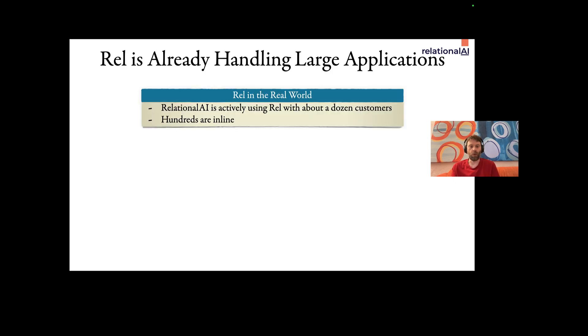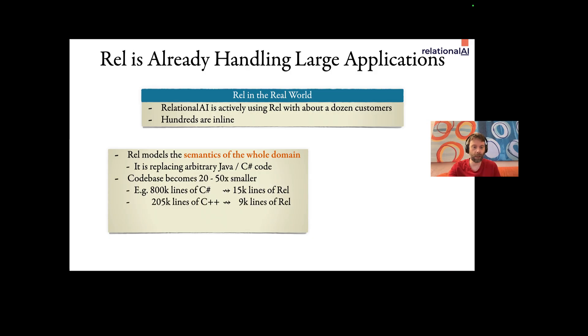Okay, yeah, I cannot explain the whole language in five minutes, but I can tell you how it's being used. So REL is already being used with customers for large applications, and the customer base is growing fast. In these applications, REL models the semantics of the whole domain, and it's replacing arbitrary Java or C-sharp code. And in doing so, we see that the code base can become 20 to 50 times smaller, and that maybe surprisingly, performance goes up.